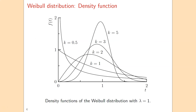Here we have the Weibull density function for different values of the shape parameter k, where we fix the scale parameter at 1. You see that k is really the shape parameter, because if k gets a different value, the shape of the Weibull density function is also quite different. If k is 0.5, it's very likely that we have very early failures. If k becomes larger, the probability mass becomes more centered around the value of lambda.